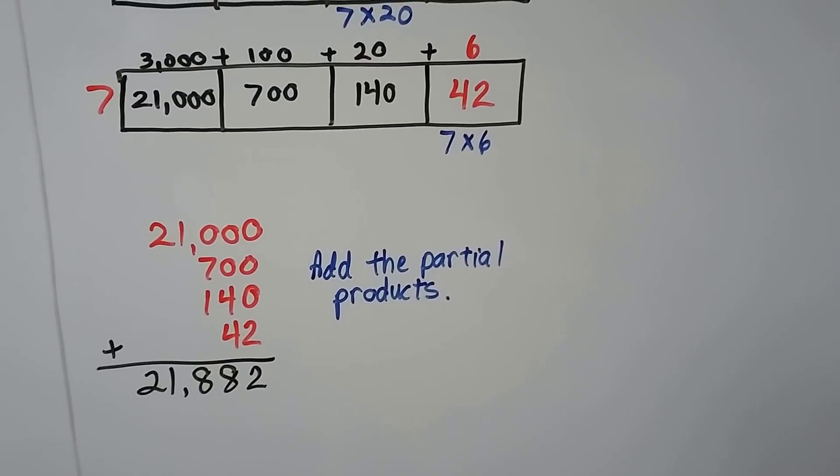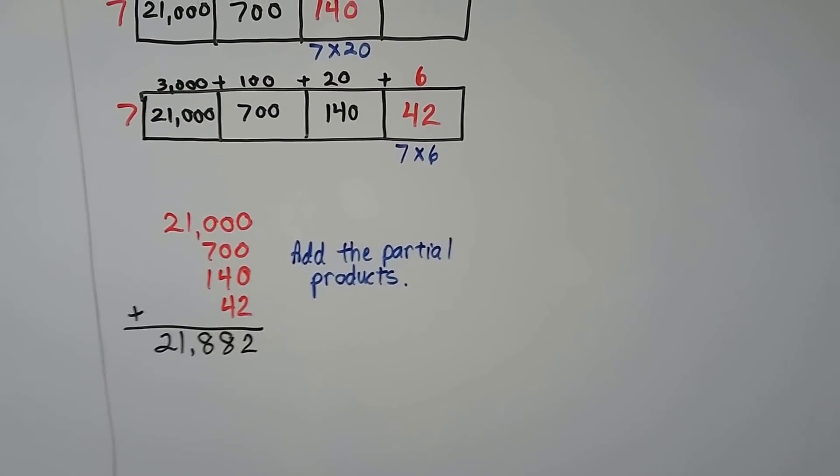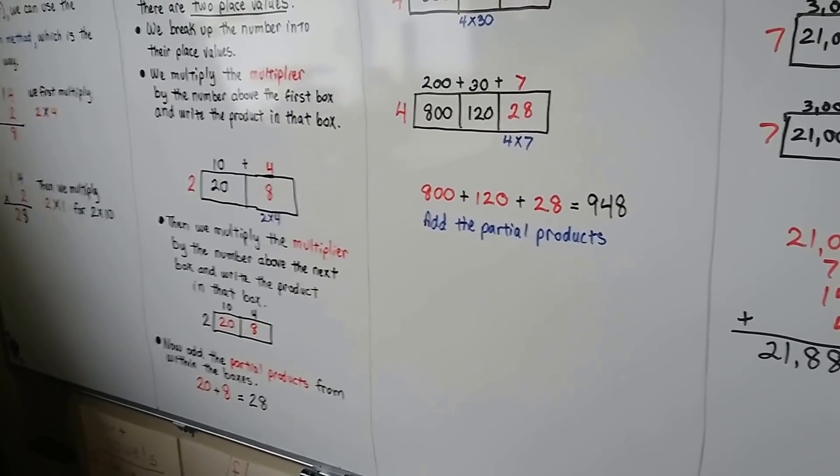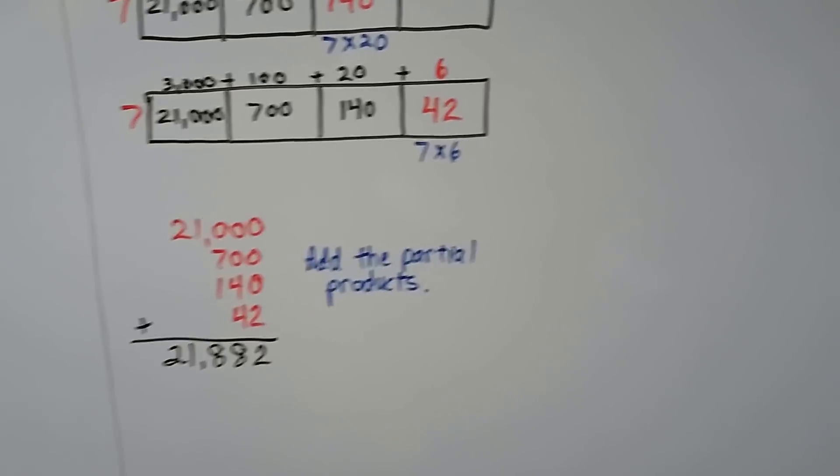We add the partial products, and we get 21,882. So this is just an alternative way of solving the problem. You could use the long-form method. That's what most people are going to use anyway. This is just an alternative method.